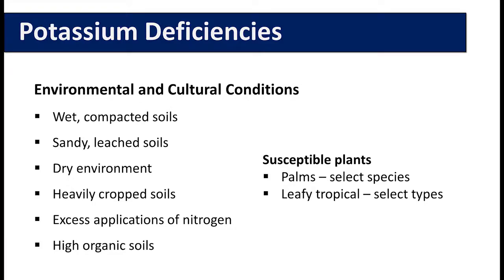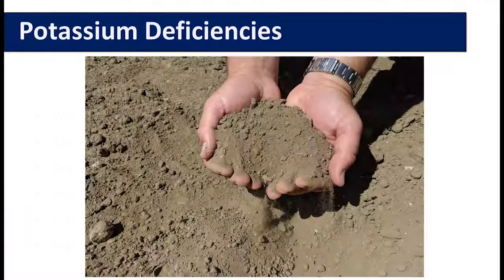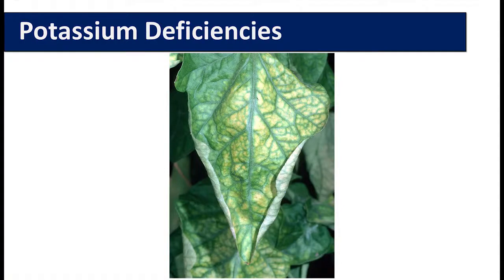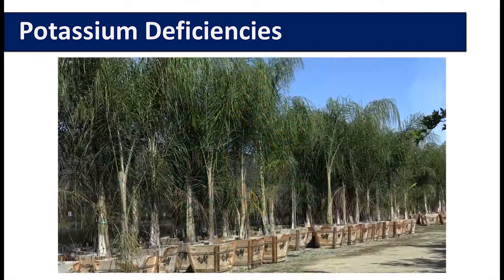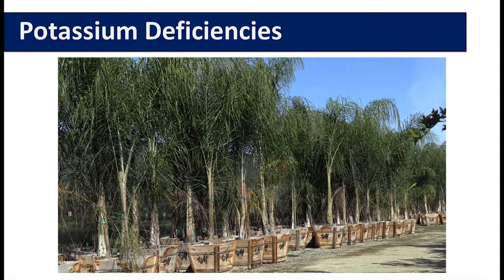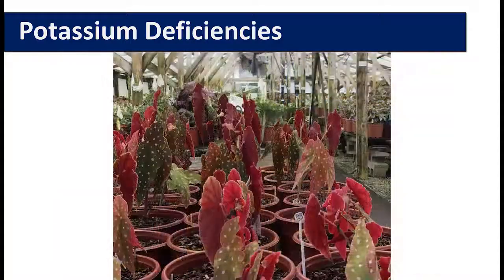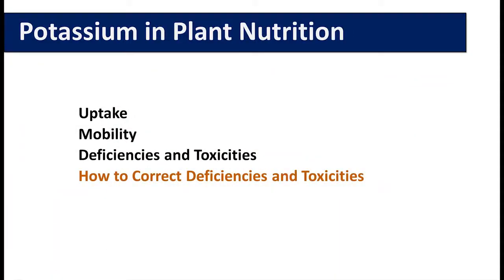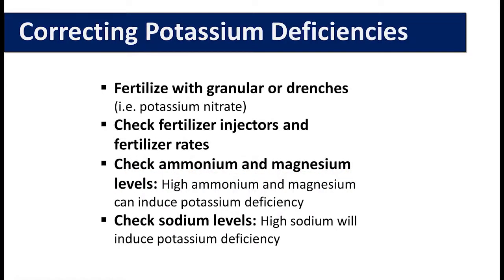There are many types of environmental and cultural conditions that can cause potassium deficiency. Things that limit root growth, such as compacted soils, can induce potassium deficiency. Sandy soils tend to be low in potassium because the soil does not readily bind potassium. Dry environments, heavily cropped soils, or excessive applications of nitrogen — specifically ammonium — or magnesium can also induce potassium deficiencies. Plants that tend to be susceptible include palms, specifically Phoenix canariensis, and leafy tropical plants.